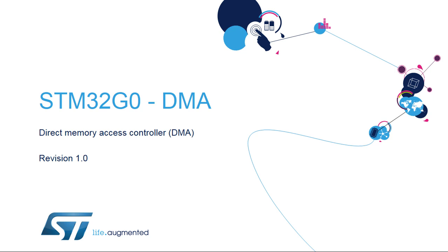Welcome to this presentation of the STM32 Direct Memory Access Controller, called DMA. It covers the main features of this module, which is widely used to handle the STM32 peripheral data transfers.